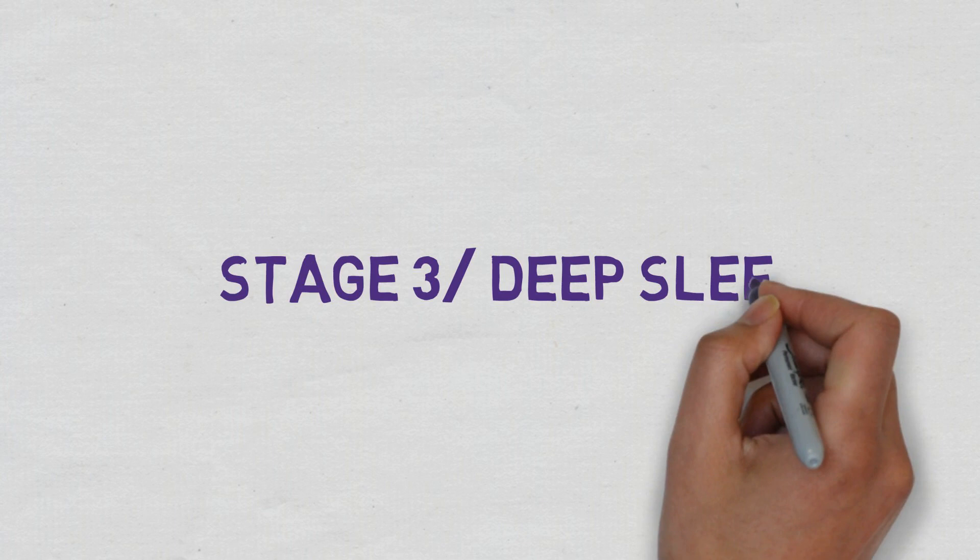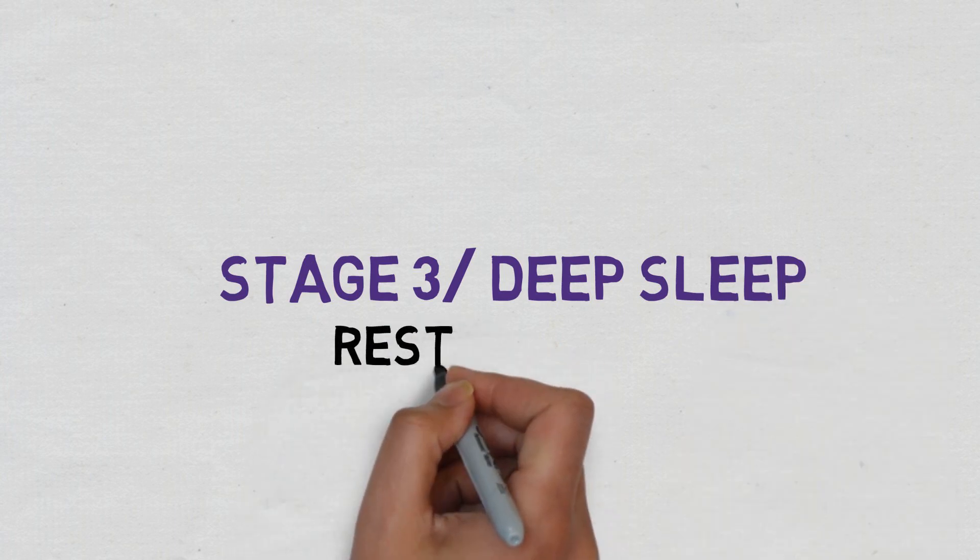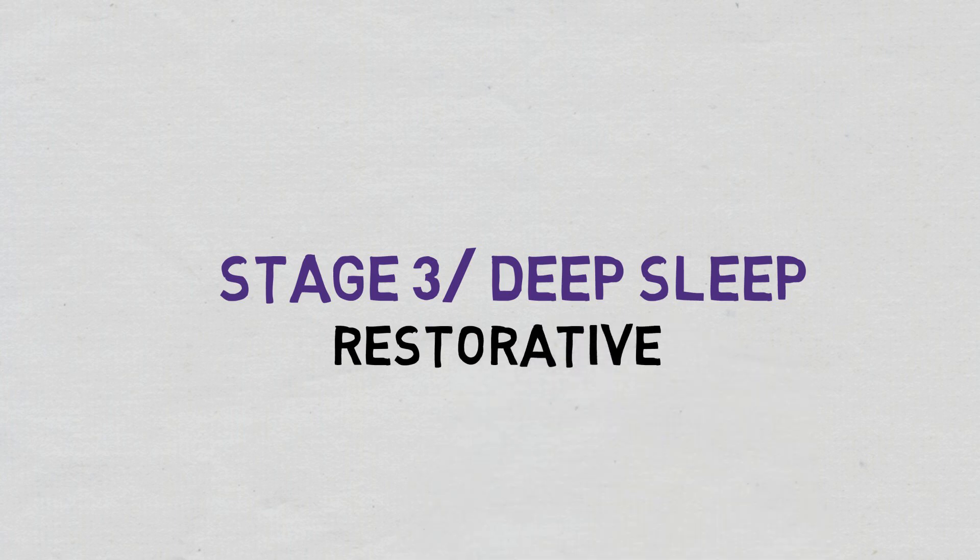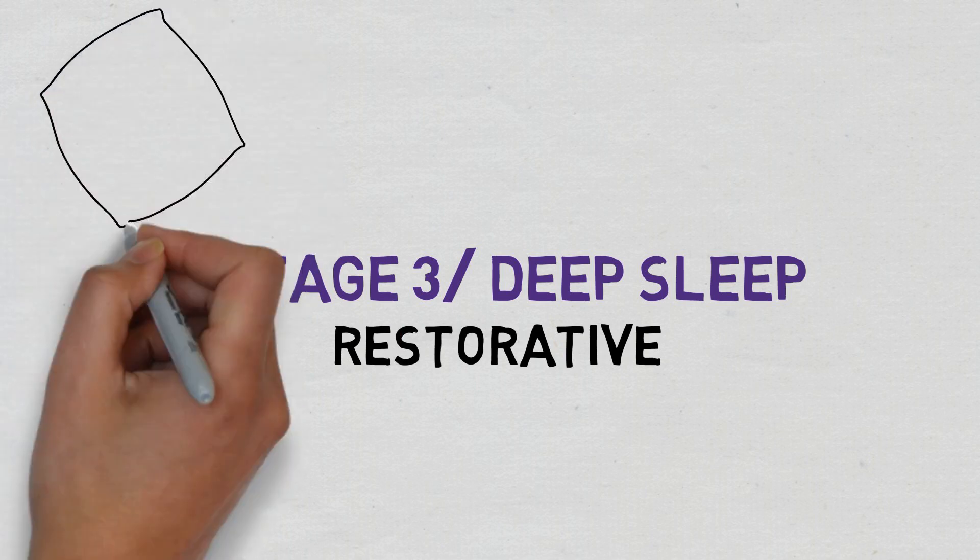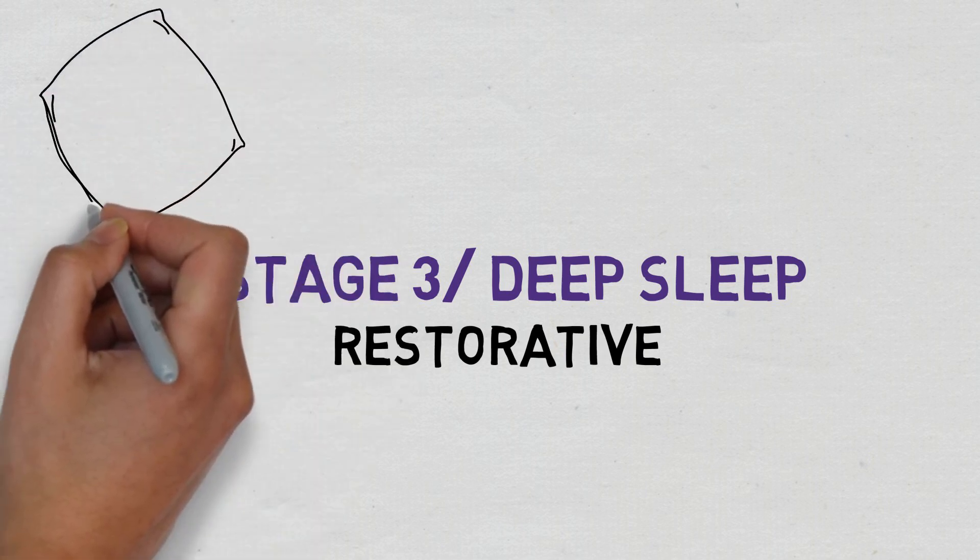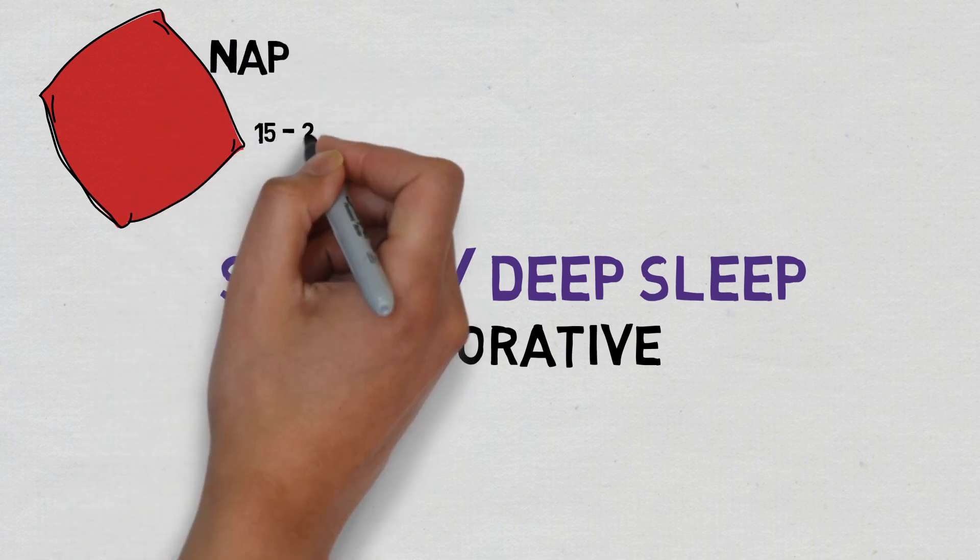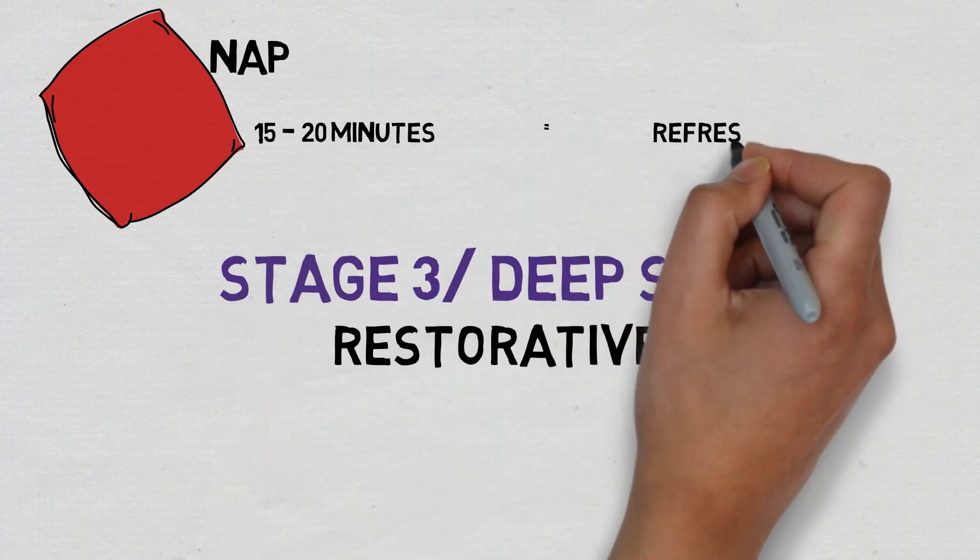So now, stage three, also known as deep sleep, is very important because it's the most restorative sleep stage. So say if a person is suffering from sleep deprivation, they will experience a very long, deep sleep in their sleep cycles. And so it is for this reason that when using a productivity hack such as nap taking during the day, you need to make sure that your naps are limited to around 20 minutes.